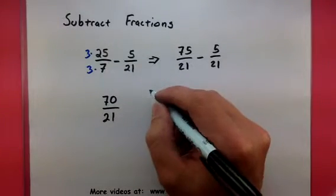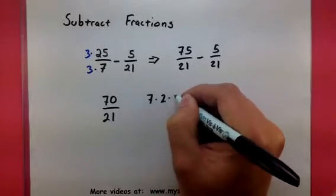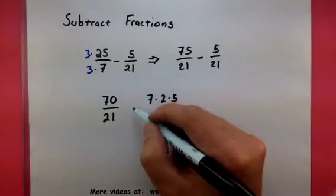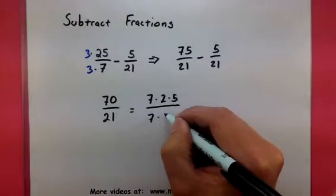In fact, if we look at the factors of this one, we have 7 times 2 times 5. And in the bottom, we have 7 times 3.